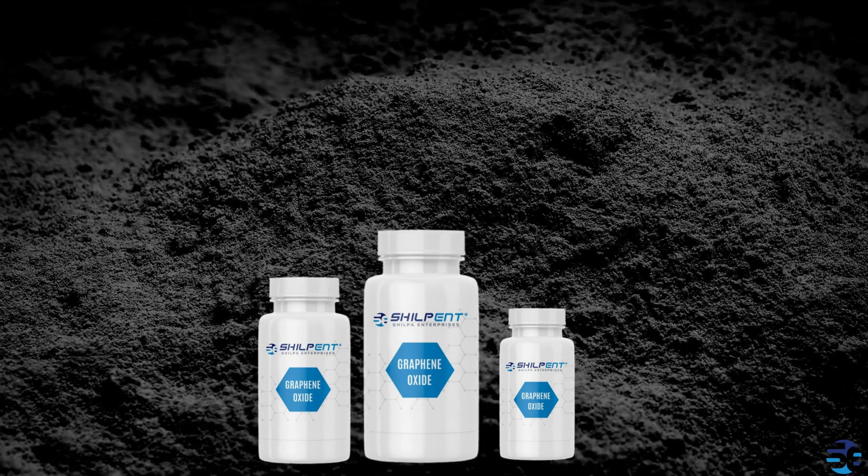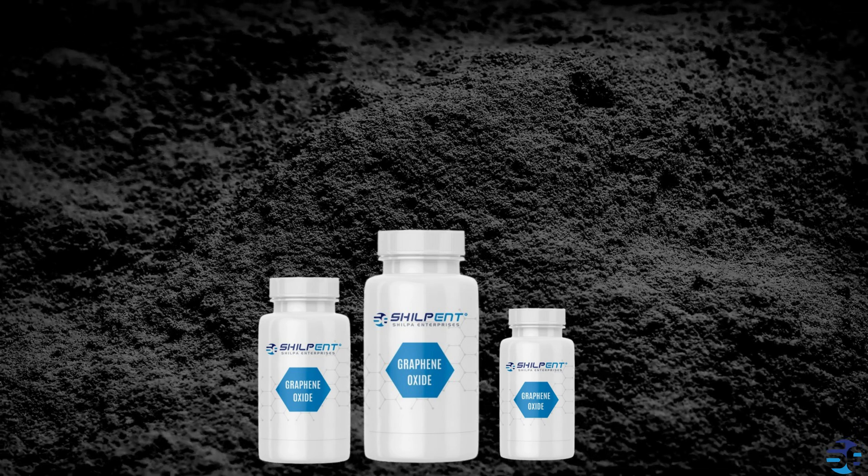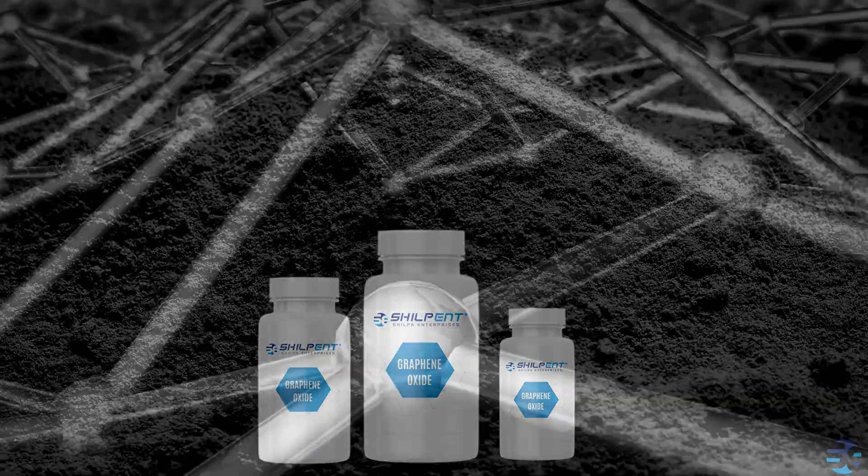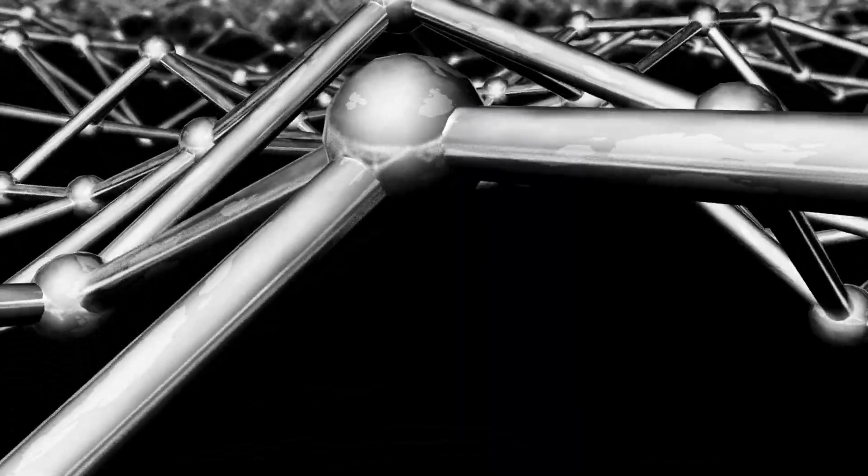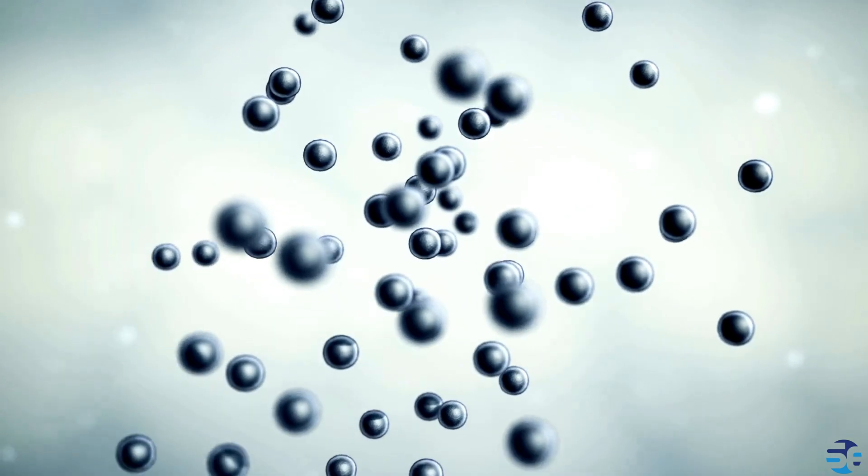The journey of graphene oxide begins with the oxidation of graphite, resulting in layers of graphene stacked on top of each other with oxygen atoms bonded to their surfaces. But what sets graphene oxide apart is its reduction process, which transforms it into an even more remarkable material.